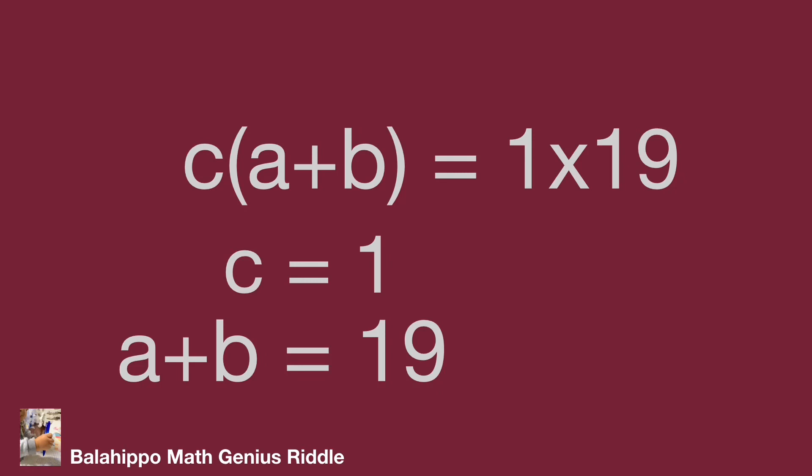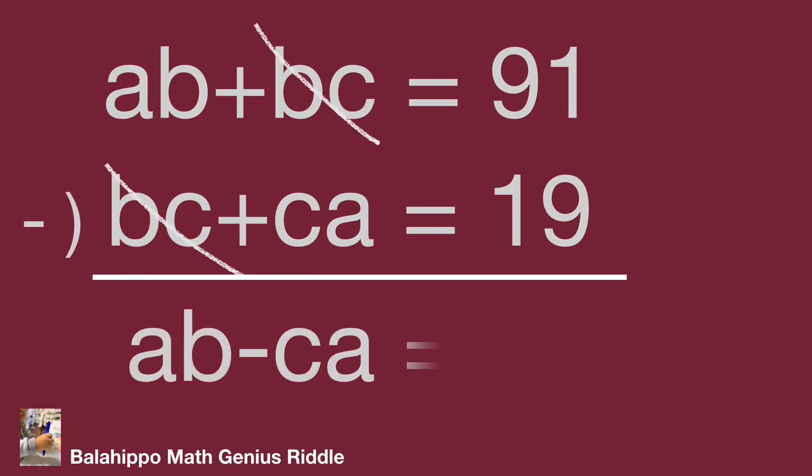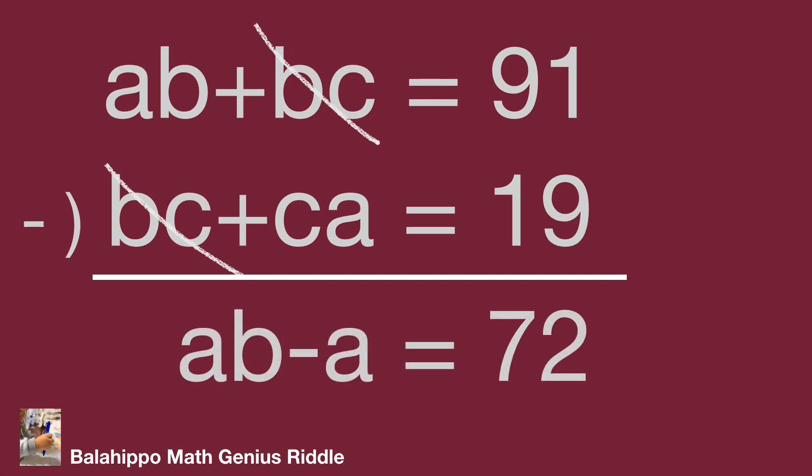Now back to the given equations ab + bc = 91 and bc + ca = 19. They have the same item bc. So the first equation minus the second equation gives ab - ca = 72. So ab - a = 72.